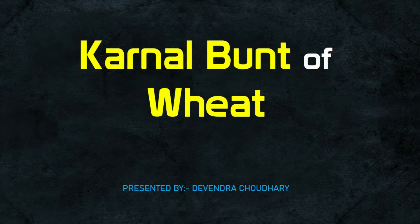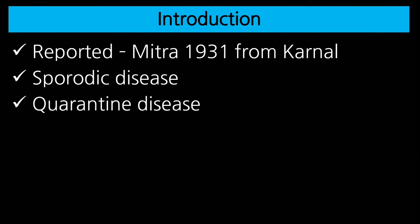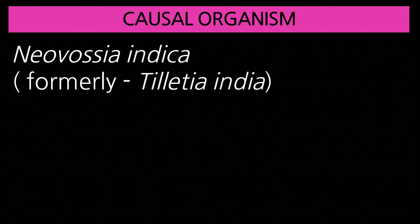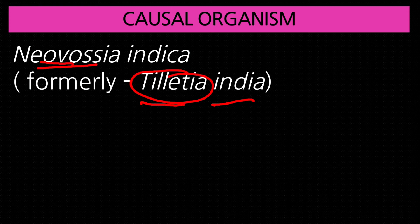Karnal bunt of wheat was first reported by Mitra in 1931 from Karnal district. It is a sporadic and quarantine disease. Karnal bunt is caused by Neovossia indica, earlier known as Tilletia indica, but the correct current name for MCQs is Neovossia indica.